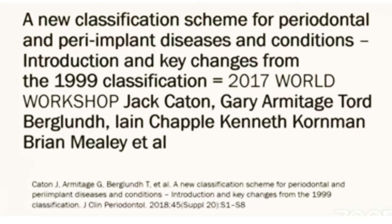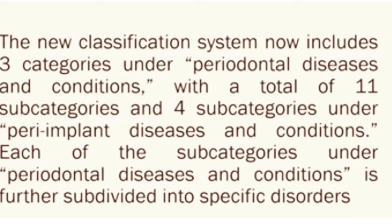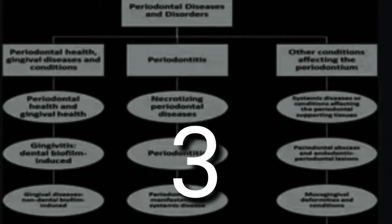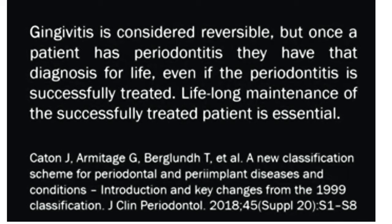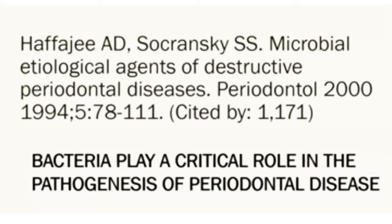A new classification scheme for periodontal and peri-implant diseases was introduced, spearheaded by Jack Caton, Gary Armitage, Iain Chapple, Kenneth Kornman, and Brian Mealey et al. They simplified Armitage's classification — which had two categories (chronic and aggressive periodontitis) — by adding three categories under the subcategory 'periodontitis,' further divided according to stages and gradings. One key point in this new classification was that gingivitis is considered reversible, but once a patient has periodontitis, they carry this diagnosis for life — just like diabetes and hypertension — making lifelong maintenance of successfully treated patients essential.